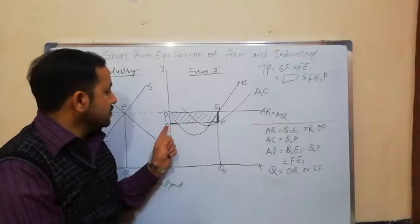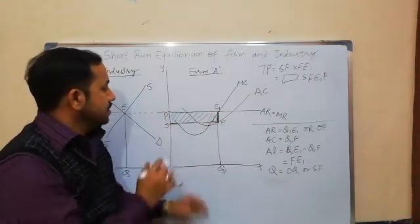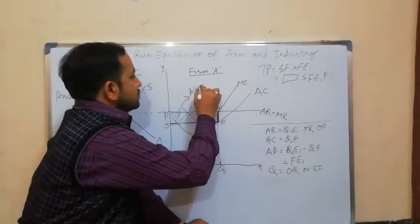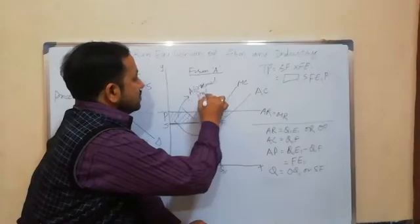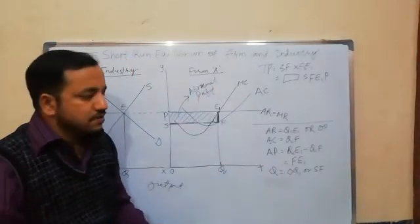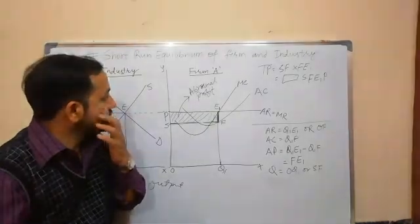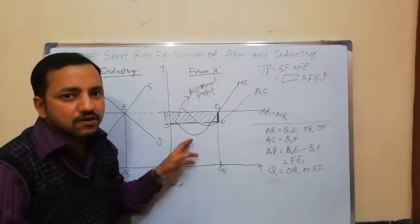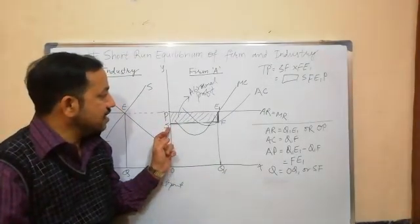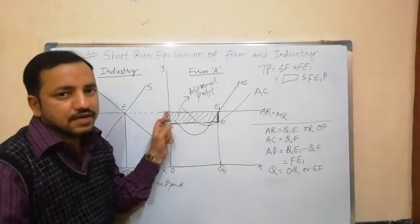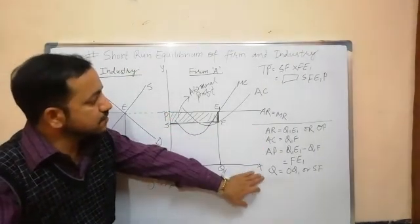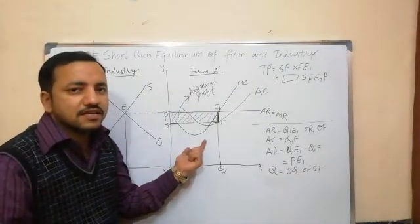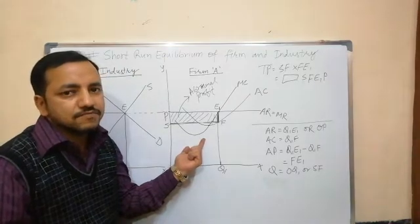This shaded area represents the abnormal or super normal profit earned by Firm A. The total profit is equal to the area SF·E1·P. This is the first situation where Firm A is earning super normal profit.